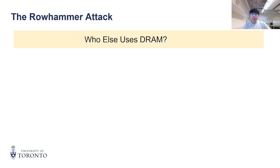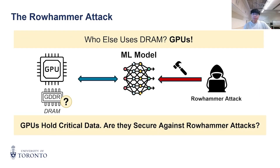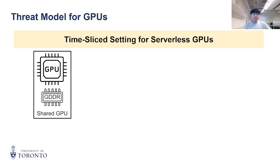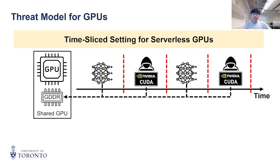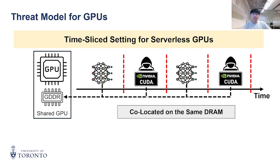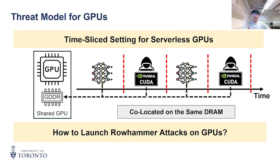But GPUs also use DRAMs, and now that they hold critical data like ML models, their security is a major concern. So what's the threat model? GPUs can be shared in time-slice scenarios where a victim and attacker can run their code at separate time intervals while having their data co-located on the same DRAM, making them vulnerable to Rowhammer attacks. Our goal is to show how to launch Rowhammer on GPUs.